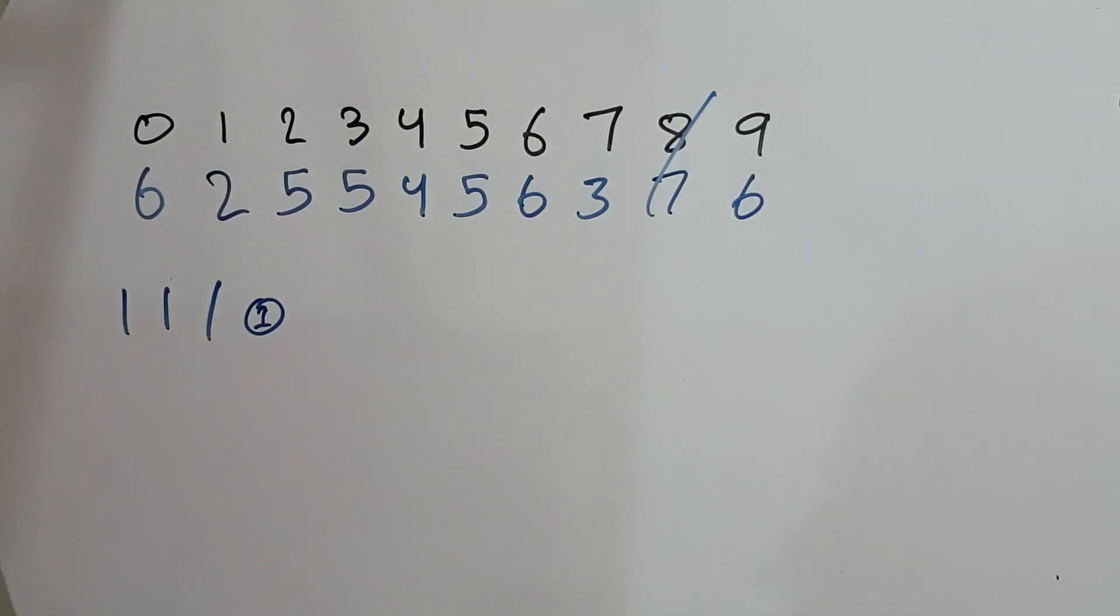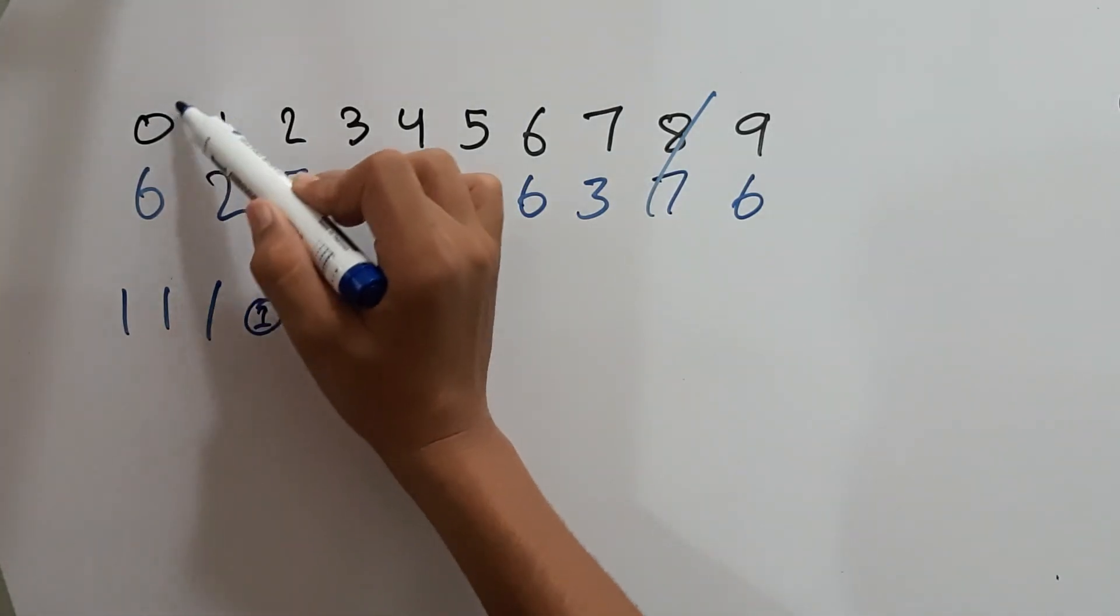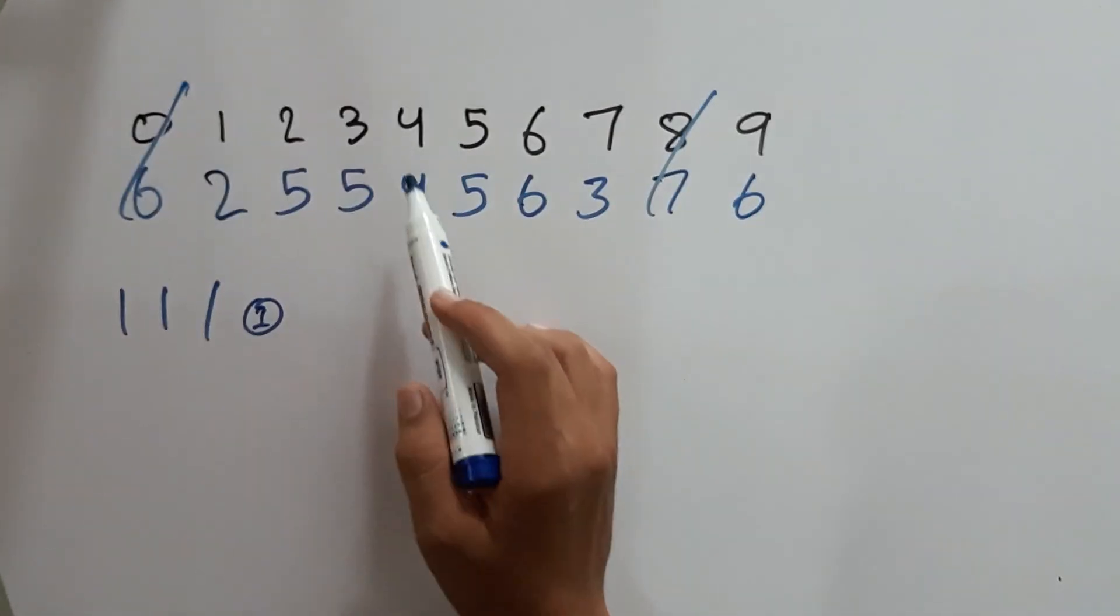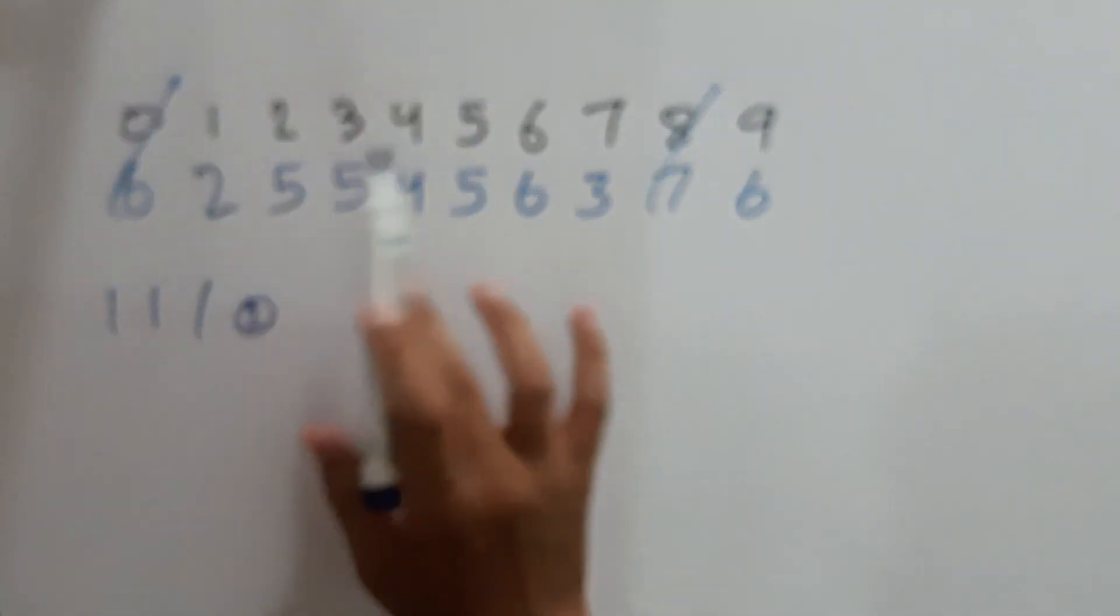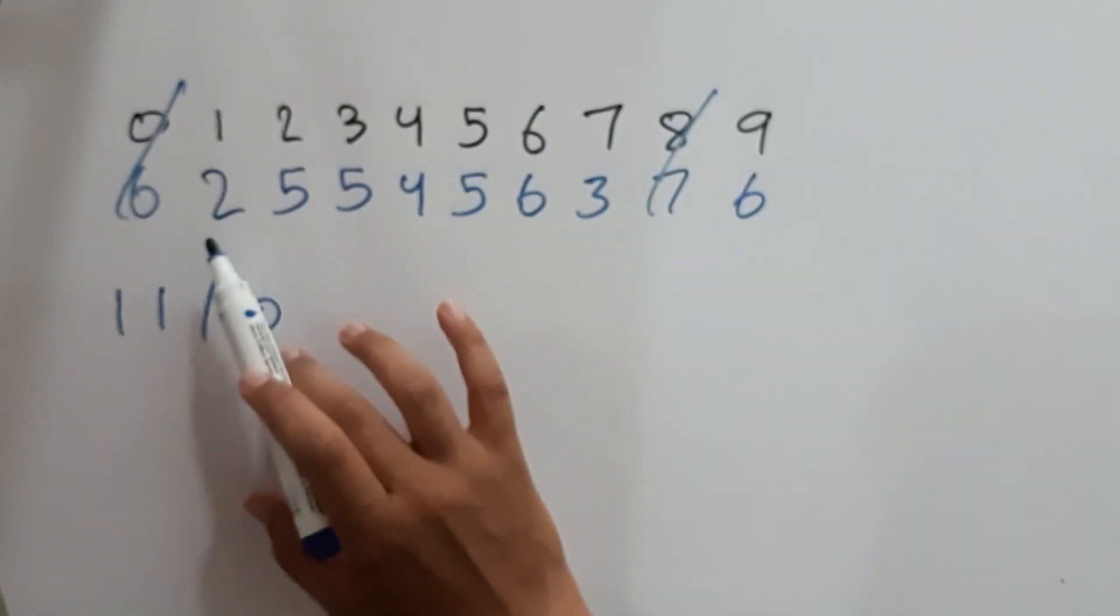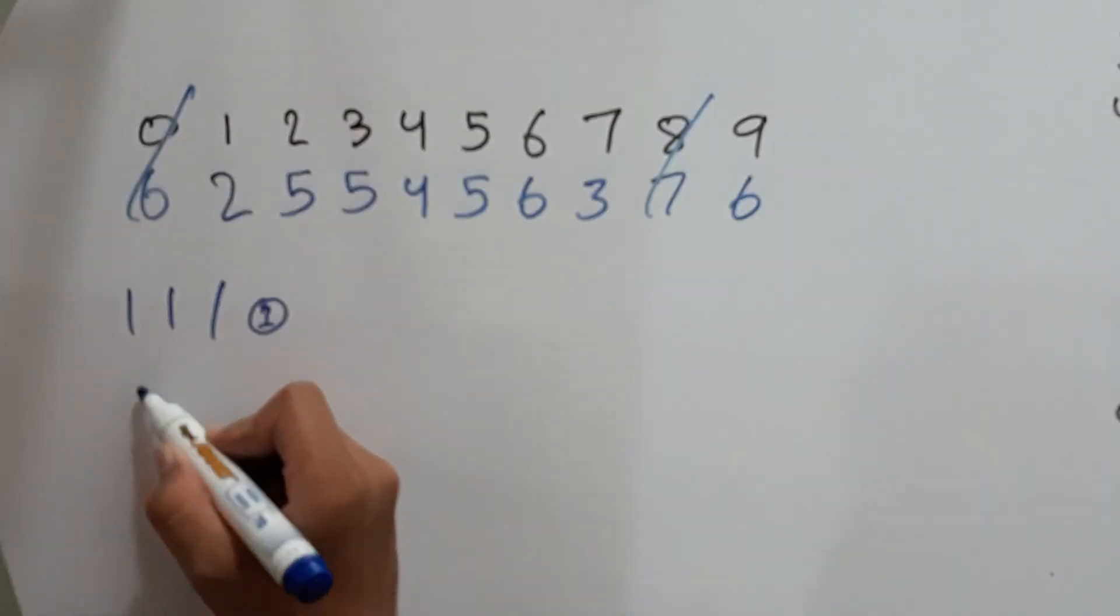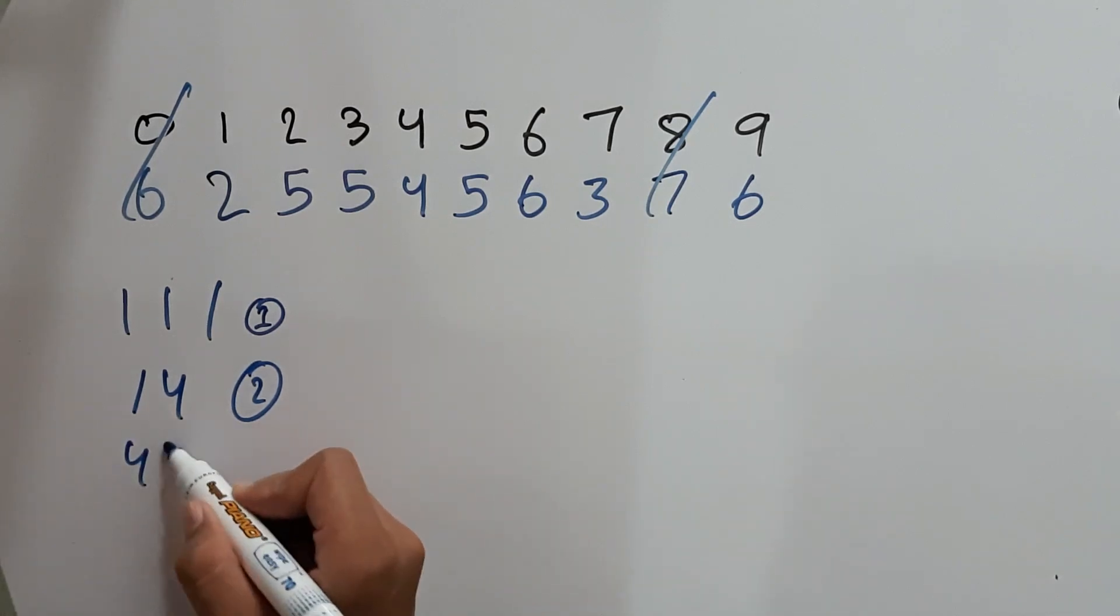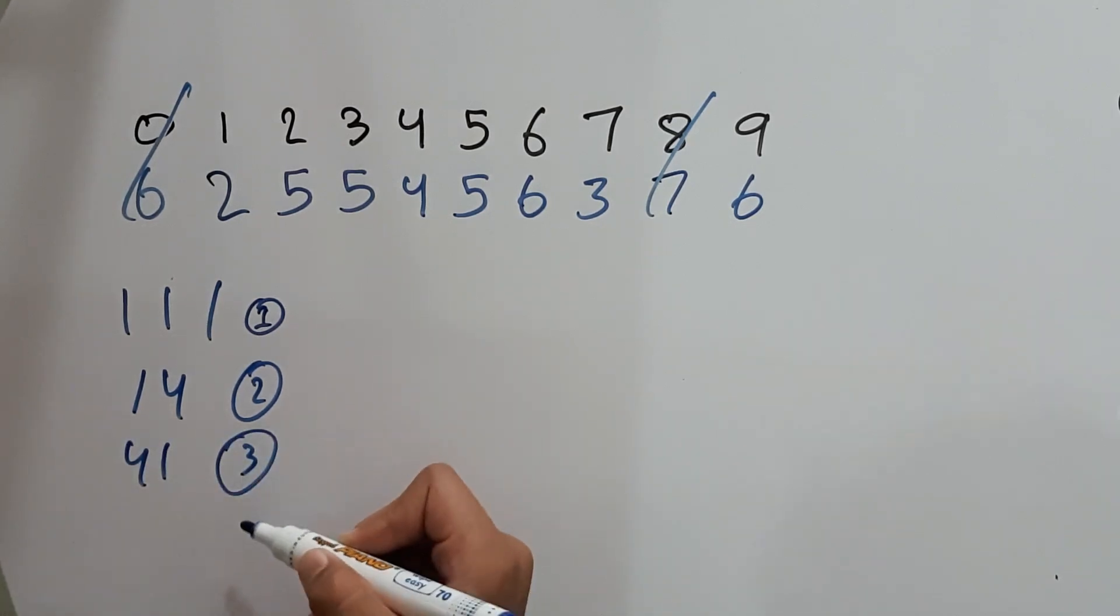We need positive integers, so we also cut 0. We can also make 14 because 4 plus 2 equals 6, and 4 contains 4 matchsticks. So 14 will be our second number, and we can also make 41, which is our number 3.